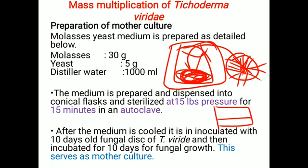The conical flask is kept in the BOD incubator for a period of 6 to 10 days. The incubator provides favorable conditions for the growth of Trichoderma viridi. Within 7 to 8 days, due to the favorable temperature — 26 ± 2°C (that is, 24 to 28°C) — the superficial growth of Trichoderma takes place on the conical flask.